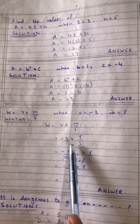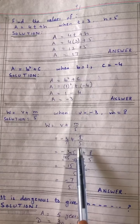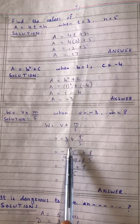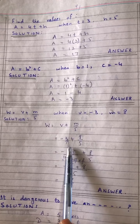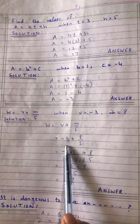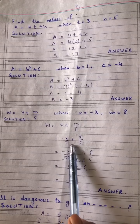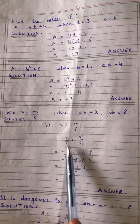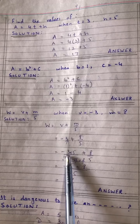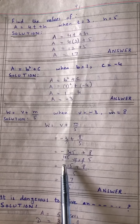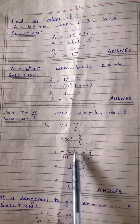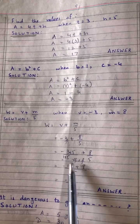We put minus 3 in place of V, plus 8 in place of M, divided by 5. Since the denominator below is 1, we need to make the denominators the same. We have 5 and 1, so we multiply 1 by 5 — both numerator and denominator. So minus 3 multiplied by 5 over 1 multiplied by 5, plus 8 by 5. Minus 3 times 5 gives us minus 15.